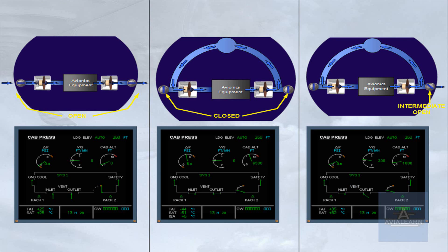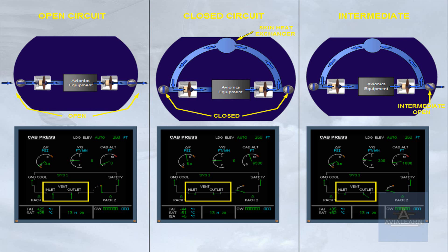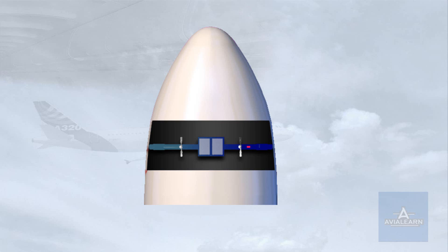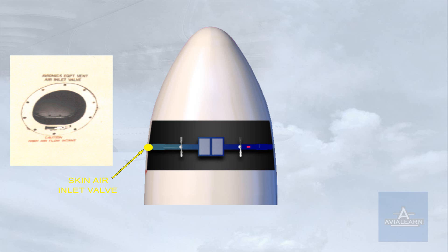To summarize: in open circuit, the equipment is cooled by outside air. In closed circuit, the equipment is cooled by compartment air and a skin heat exchanger. In the intermediate configuration, the equipment is cooled by compartment air and a skin heat exchanger, then partially exhausted overboard. The skin air inlet valve is located on the left side of the aircraft and the extract valve on the right side.